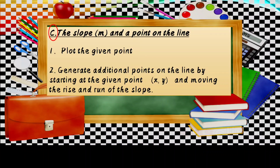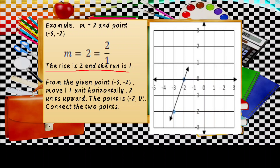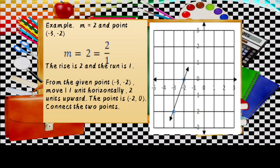Lastly, graphing using the slope and a point on the line. Plot the given point. Then generate additional points by starting at the given point (X, Y) and moving the rise and run of the slope. Example: M equals 2, and the point is (negative 3, negative 2). M equals 2 equals 2 over 1, so the rise is 2 and the run is 1. From the point (negative 3, negative 2), move 1 unit horizontally and 2 units upward to reach the point (negative 2, 0). Then connect the two points.